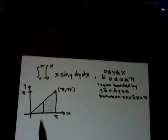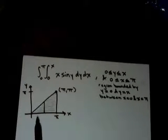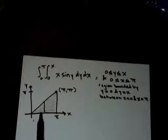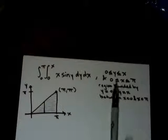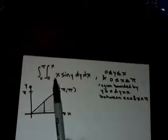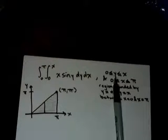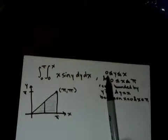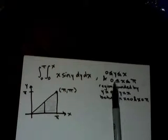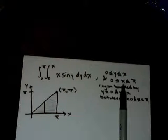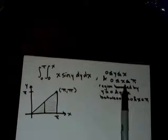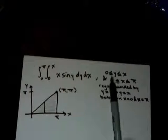We went ahead and sketched our region right here. We look at our limits in the graph and we see that y is bounded by 0 and x, and our x is bounded by 0 and pi.